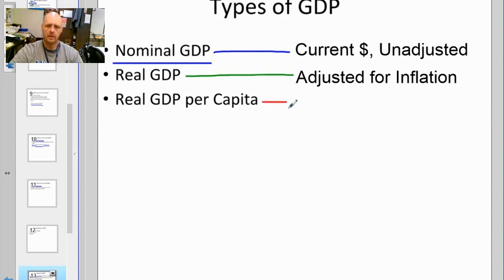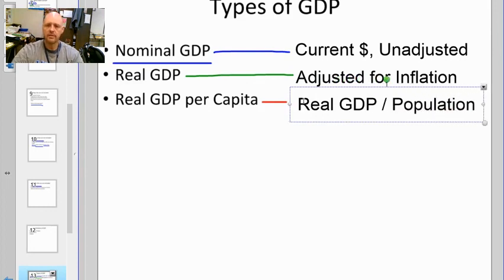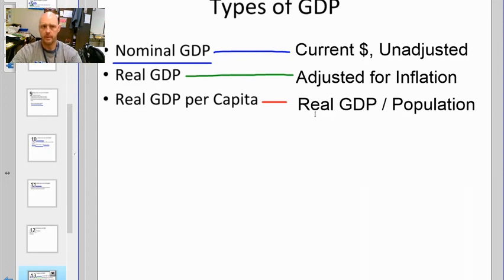Our last measure is real GDP per capita — that's real GDP divided by population. Each of these three measures gives us a feel for how the country and economy are doing. We can compare them to prior years or to other countries. Real GDP per capita is probably our biggest measure for comparing ourselves to other countries, because every country has a different size. Dividing production by population gives you a better handle on the general standard of living for that country. That is chapter 12: Gross Domestic Product — evaluating an economy.